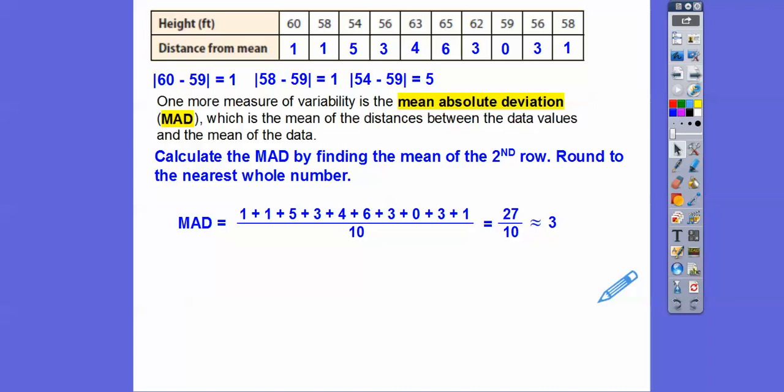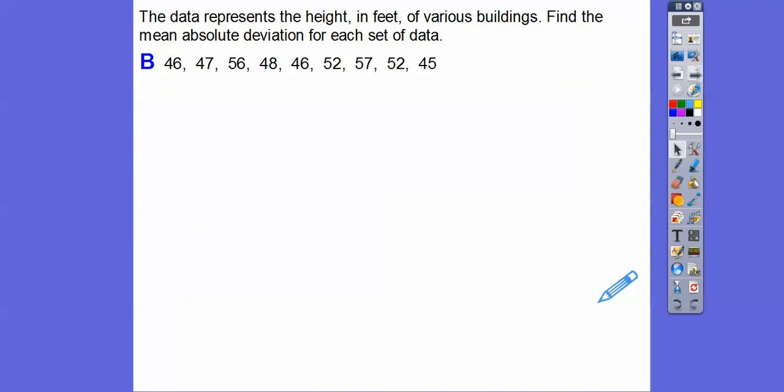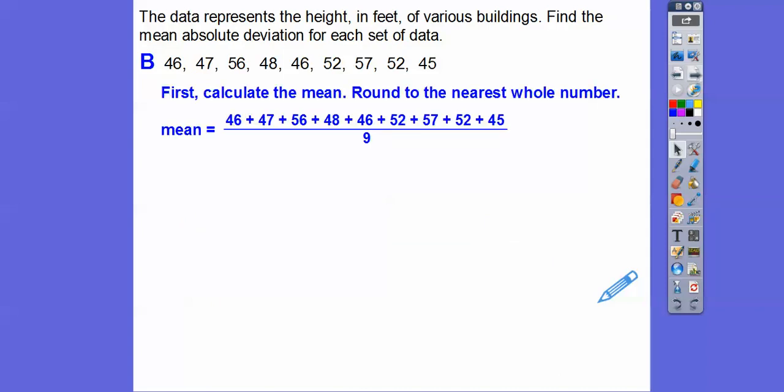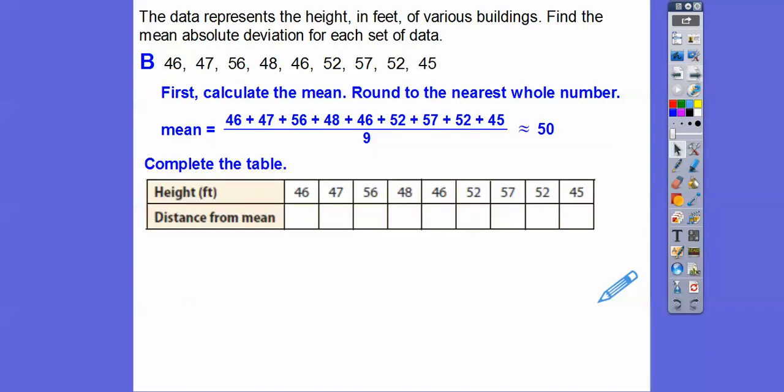Now, keep in mind, we're going to do another one with city B. Here's city B. Let's first find the mean of those numbers. Add those up and divide by 9 in this case.